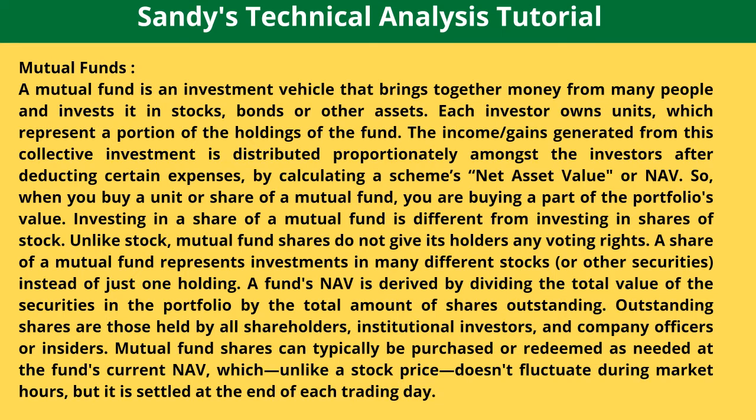A fund's NAV is derived by dividing the total value of the securities in the portfolio by the total amount of shares outstanding. Outstanding shares are those held by all shareholders, institutional investors, and company officers or insiders. Mutual fund shares can typically be purchased or redeemed as needed at the fund's current NAV, which unlike a stock price doesn't fluctuate during market hours but is settled at the end of each trading day.